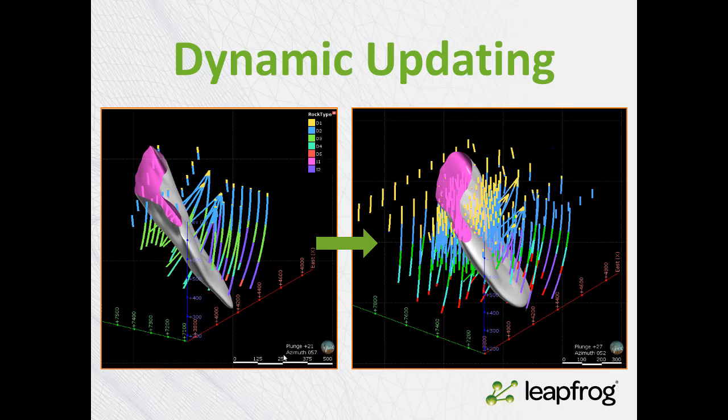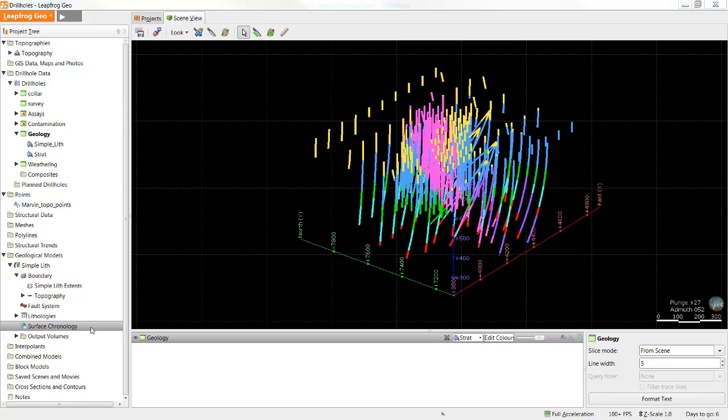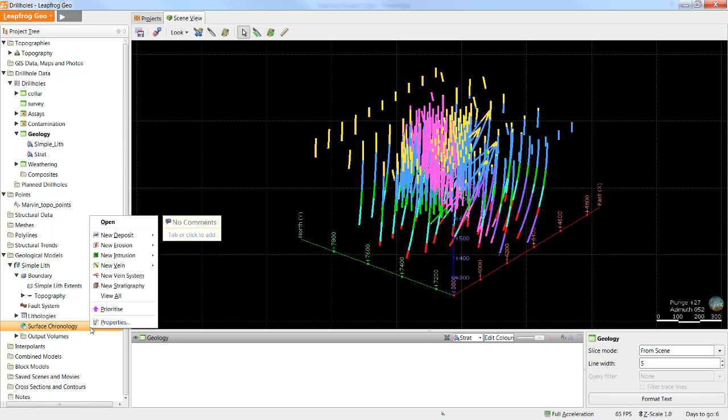The surface chronology subfolder in the Geological Models folder contains four different surface type functions: New deposit, new erosion, new intrusion, and new vein.